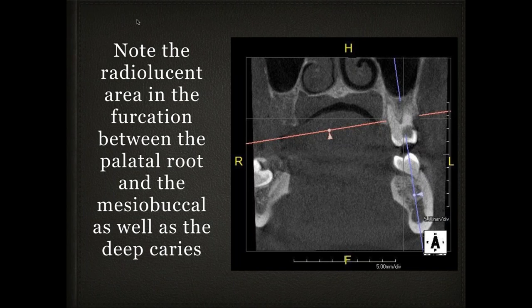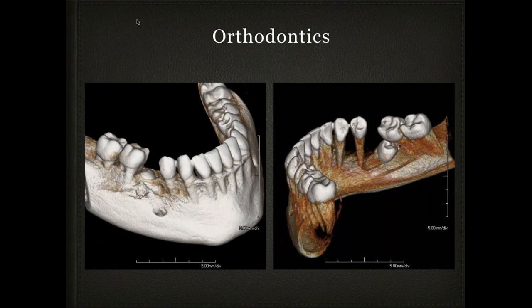In this case there's caries again, but note the radiolucent area in the furcation between the palatal root and the mesiobuccal root — very difficult to see two-dimensionally and hard to even probe. If you have a periodontal situation occurring along with a large carious lesion and you're talking about significant expense to restore the tooth, perhaps a discussion should be had about periodontal therapy or possibly replacing the tooth. These are the kinds of things a diagnostician needs to know before developing the treatment plan and presenting it to the patient.